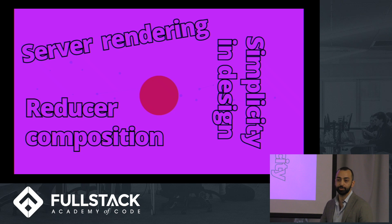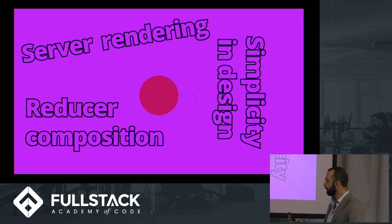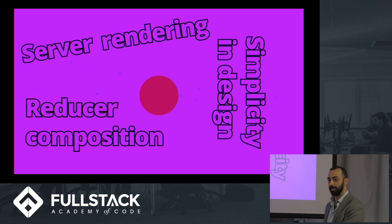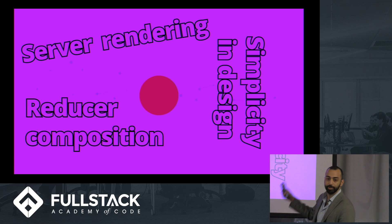The reason why it's predictable is because those actions can be played back in order, and because of the functional nature that everything is built upon, those same actions can always produce the same state. So if you play those 20 things back, you're going to get the exact same state. This makes it really good because it's very simple in design. All of Redux is done under 100 lines of code.